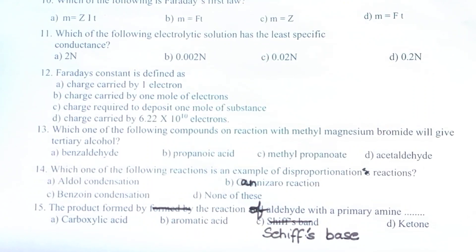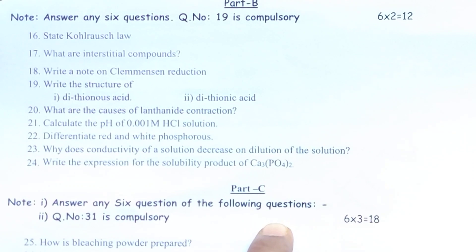14. Which one of the following reaction is an example of disproportionation reaction? 15. The product formed by the reaction of an aldehyde with a primary amine. Next, Part B.